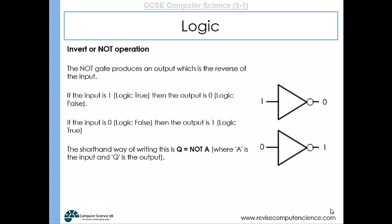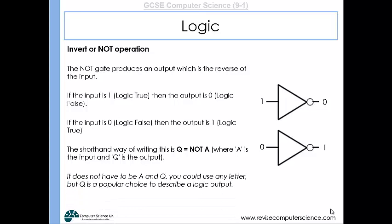If the input is a zero, the NOT gate will output a one. Just recognize that a one is logic true and zero is logic false. The shorthand for writing this is: Q equals NOT A, where A is the input. Q is a popular choice when describing the outputs of logic gates, but you could use any letter.